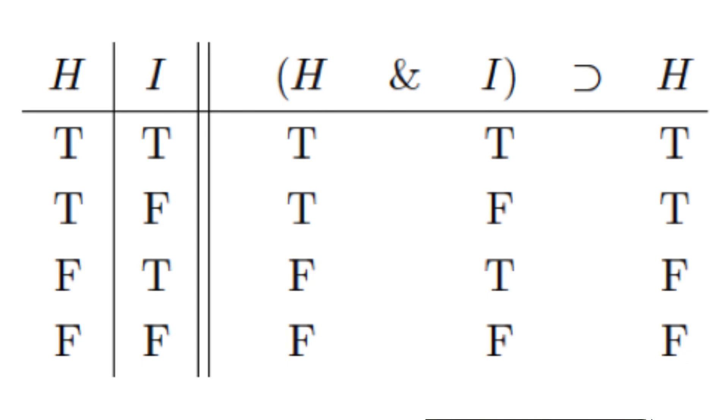We now need to complete the truth table by filling in the truth values for the connectives, albeit in the proper order. Since the horseshoe represents the main connective, we'll handle that last. We'll start with the sub-sentence H and I that uses the ampersand since it's the connective used in the antecedent of the conditional and therefore has a smaller scope than the main connective, the horseshoe.